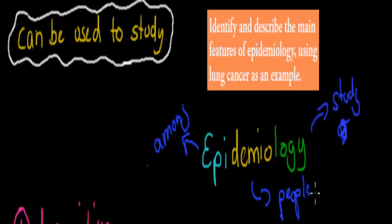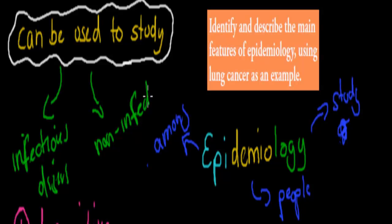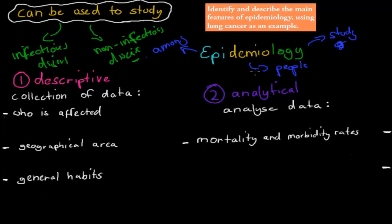Epidemiology is where we study health problems that occur among people, among our society. It can be used to study both infectious disease, such as the flu, and also non-infectious disease, such as lung cancer and heart disease. Most of our statistics and knowledge about disease comes from epidemiology studies that have been conducted for more than 100 years. We use this information to get to the core of why these diseases are caused and how many of them exist in our society.